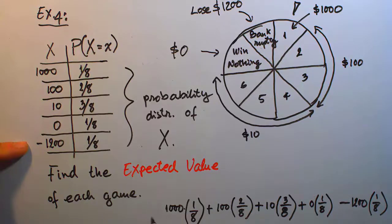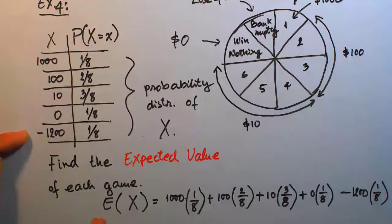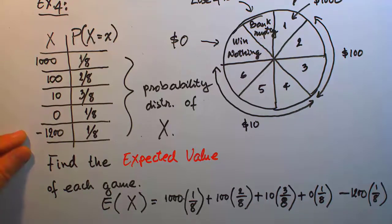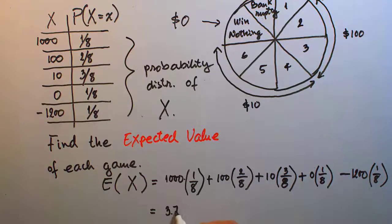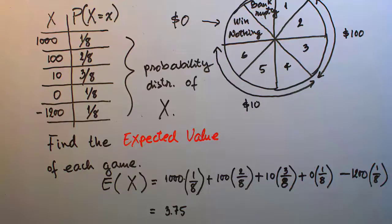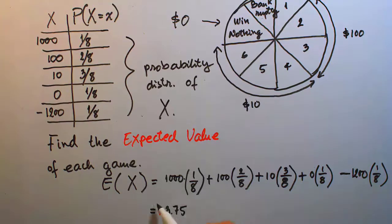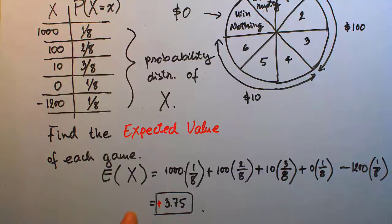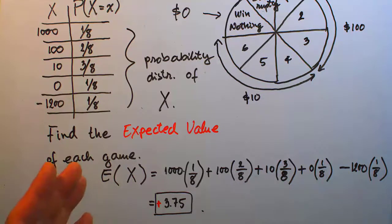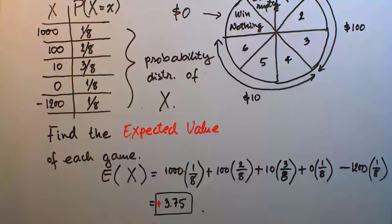The expected value is written as E(X), using capital letter E with the random variable in parentheses. The calculation turns out to be $3.75, and it's a positive $3.75. So my final expected value for this particular example is positive, indicated by a plus sign — it's positive $3.75.